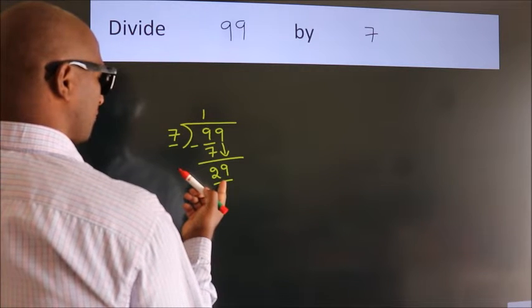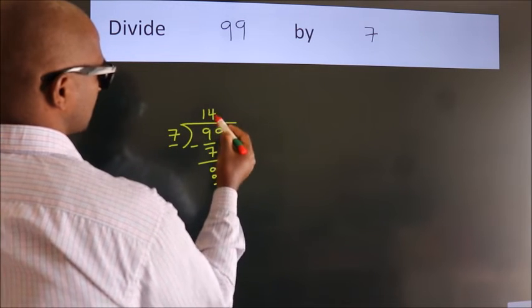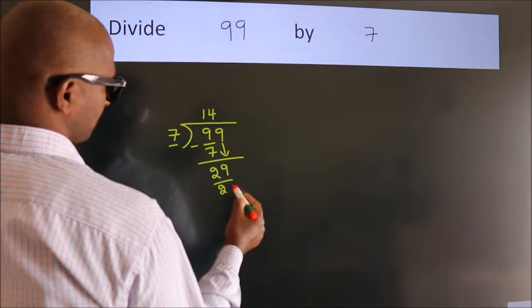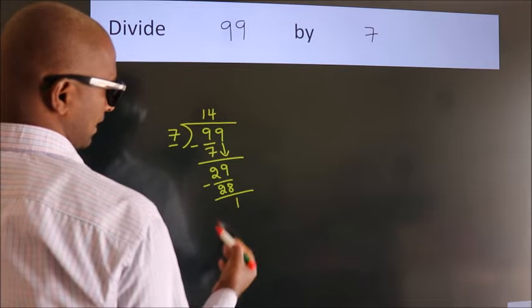A number close to 29 in the 7 table is 7 fours, which is 28. Now we subtract and get 1.